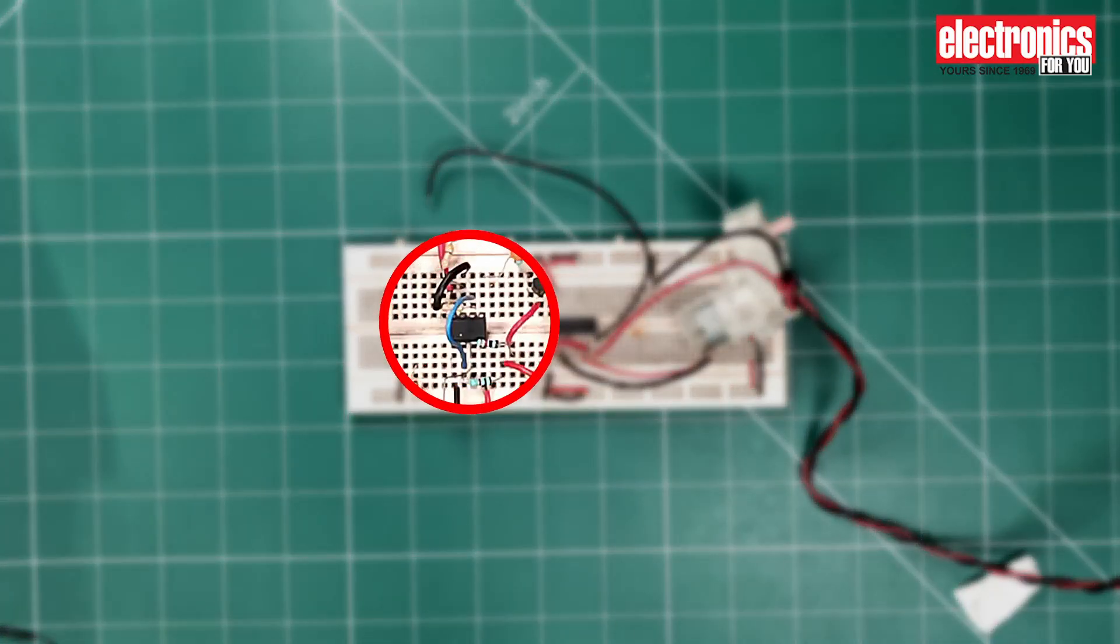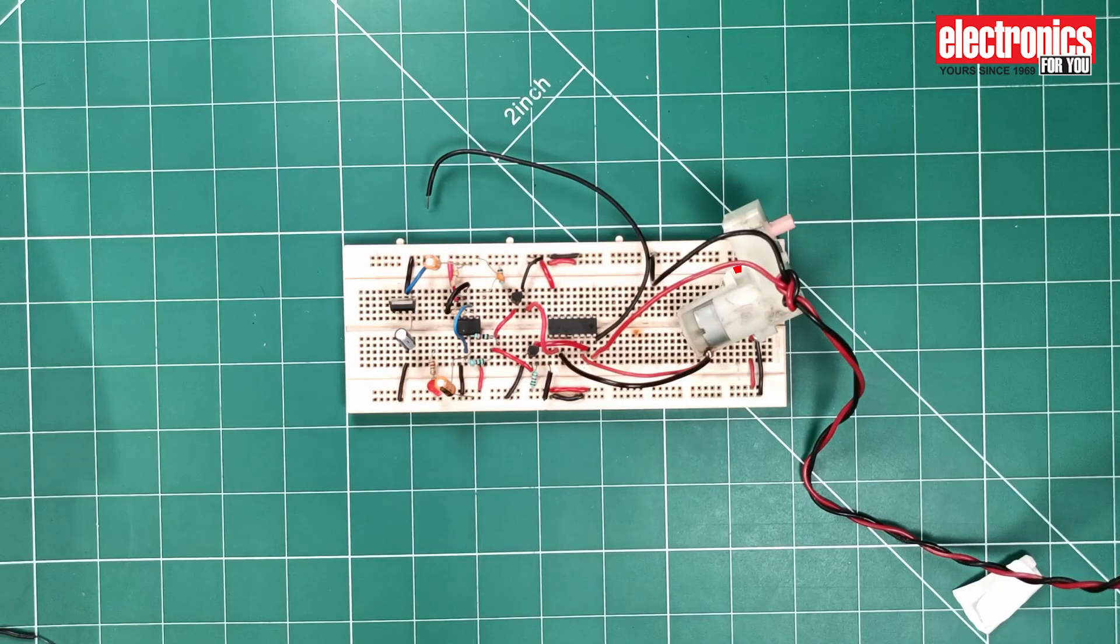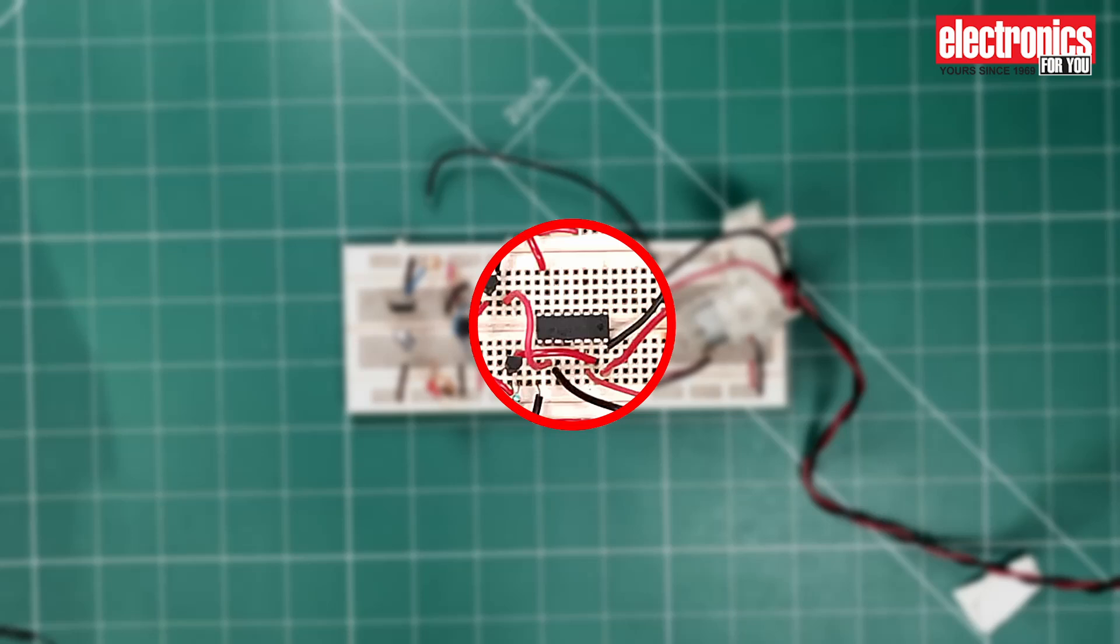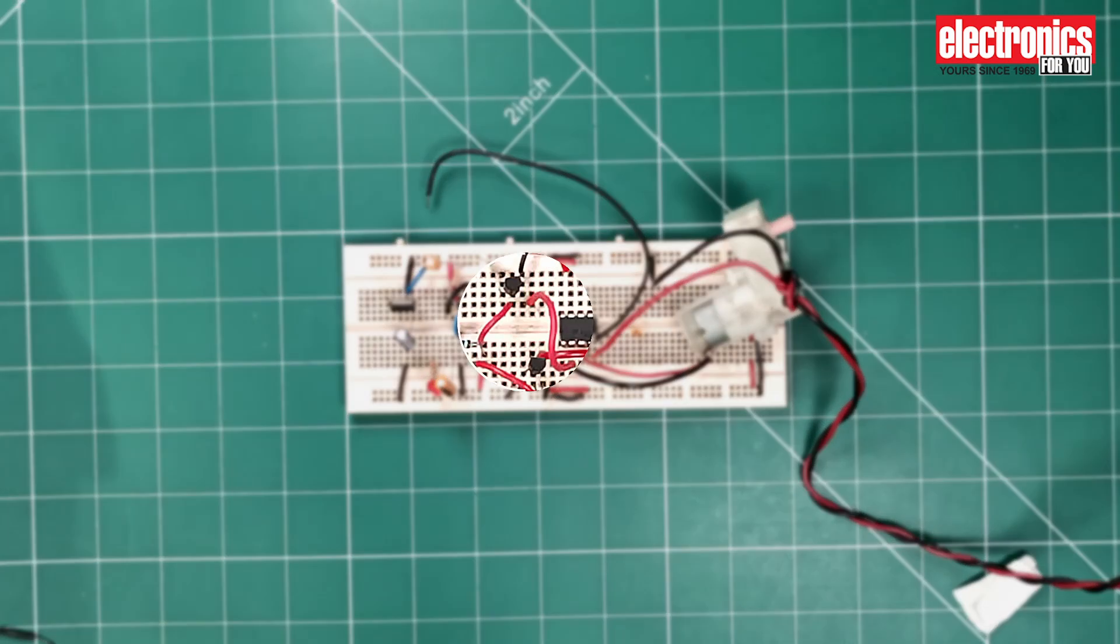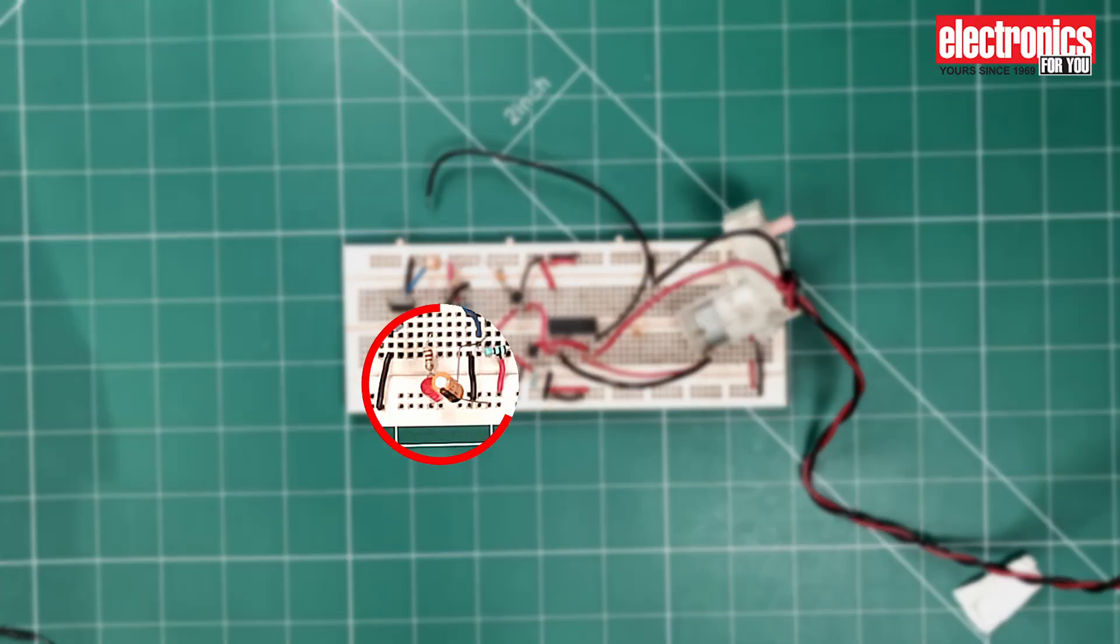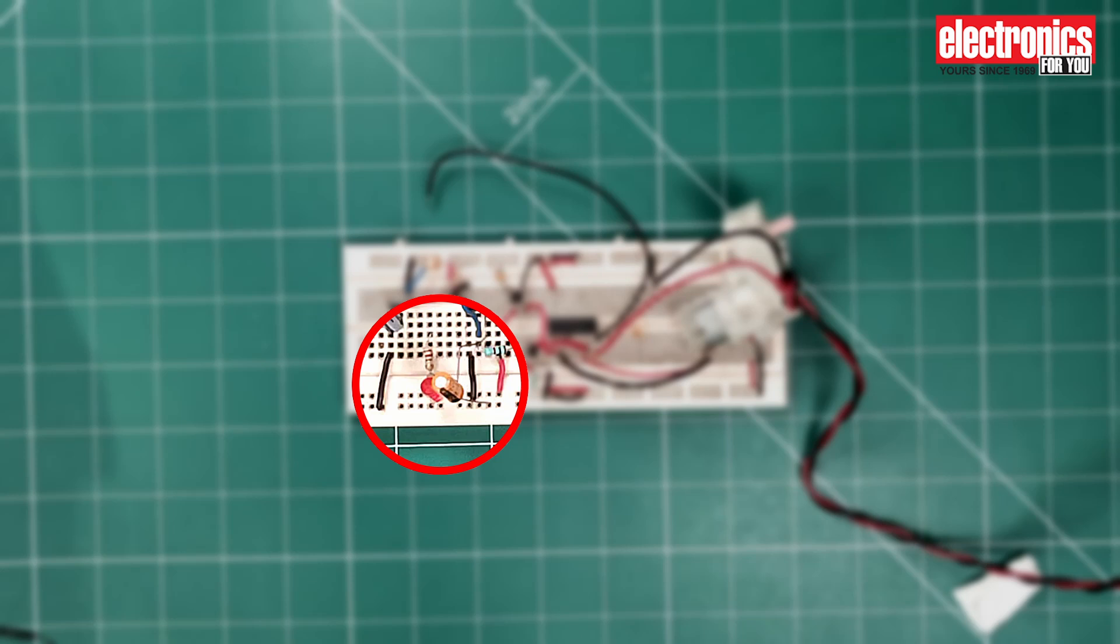The 555 timer IC is configured in astable multivibrator mode. The gear motor is powered by the motor driver IC. The enable pin of the IC is connected to the two transistors. An LED indicates the blinking of the astable multivibrator.